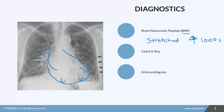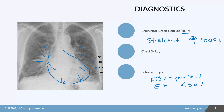A chest x-ray may also show fluid in the lungs — that's the pulmonary edema from the congestion. We'll also get an echocardiogram, which shows end-diastolic volumes — remember that measures preload — as well as ejection fraction. In heart failure patients, ejection fraction is usually less than 50%. An echo can also reveal any valve disorders.